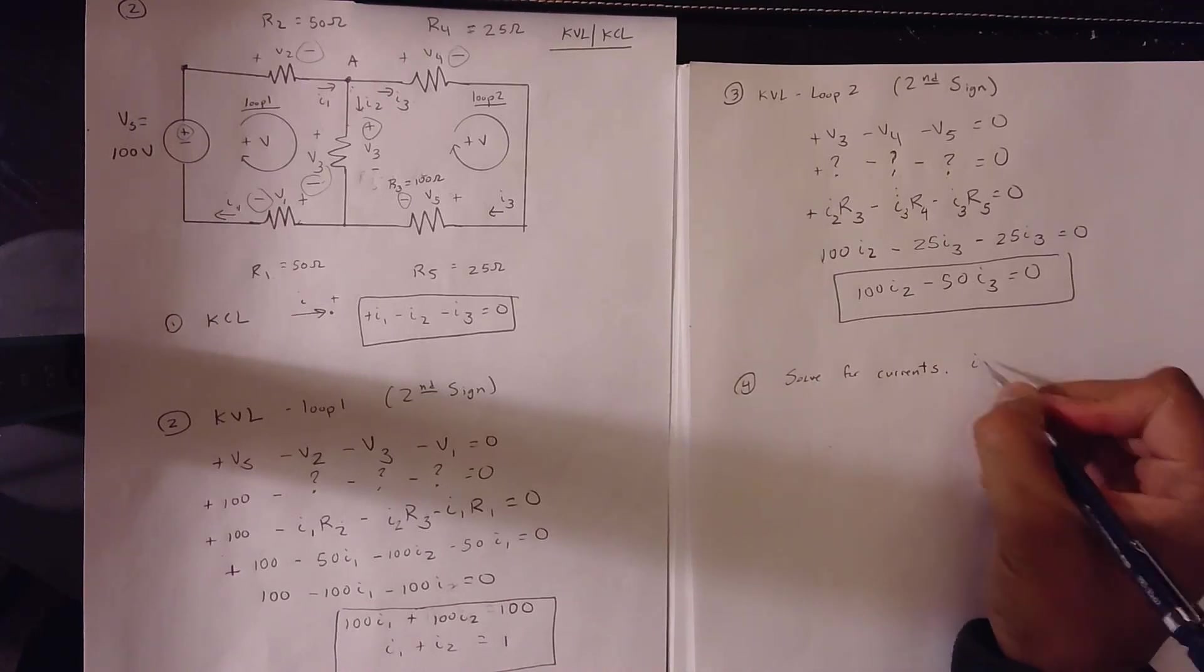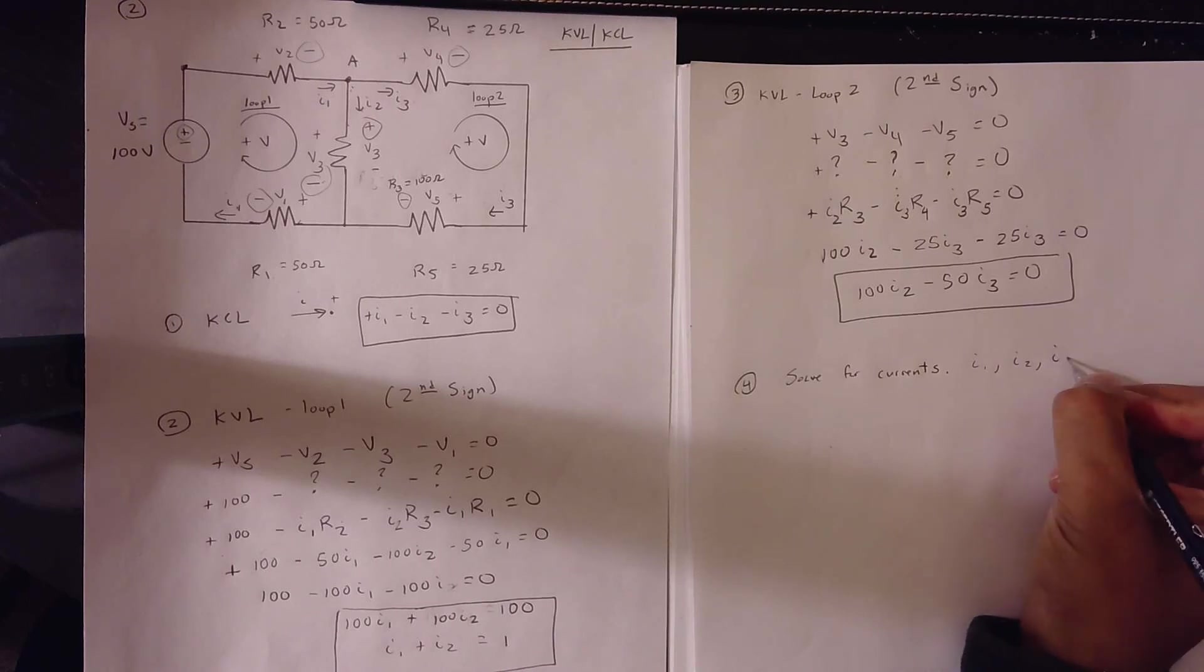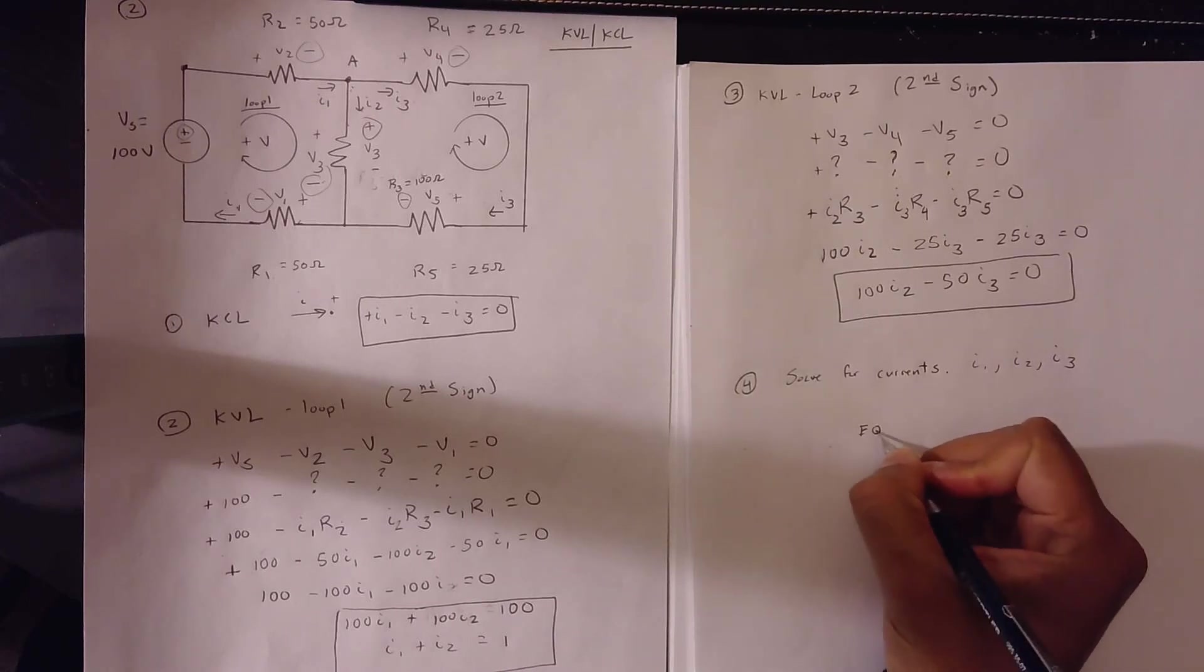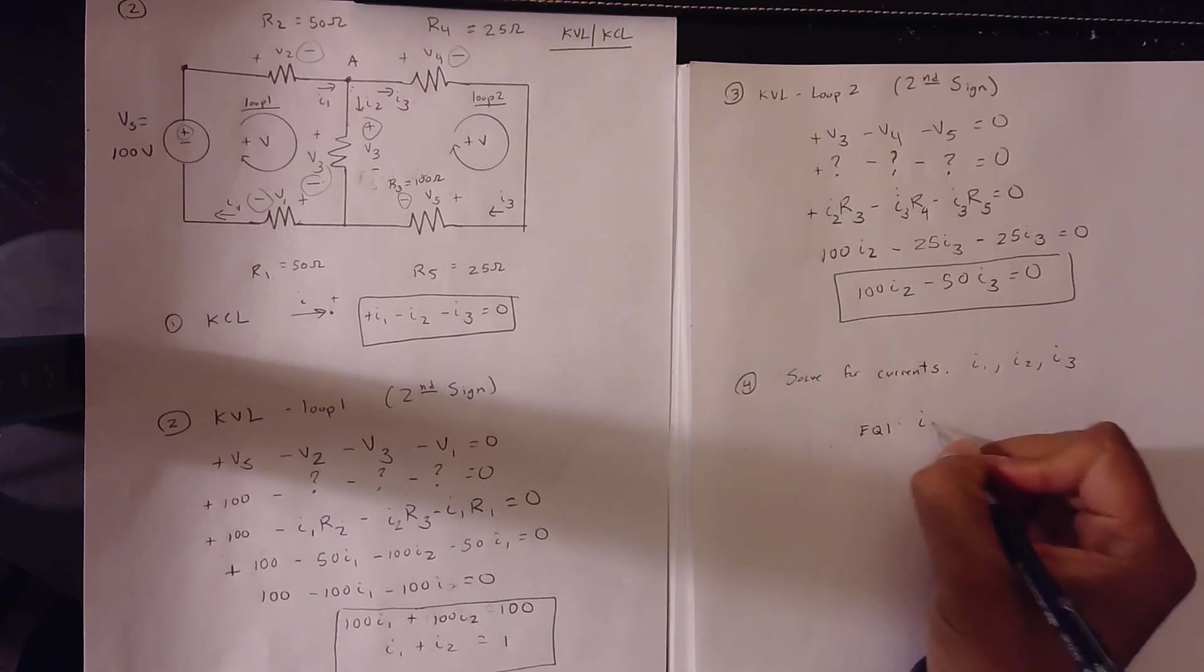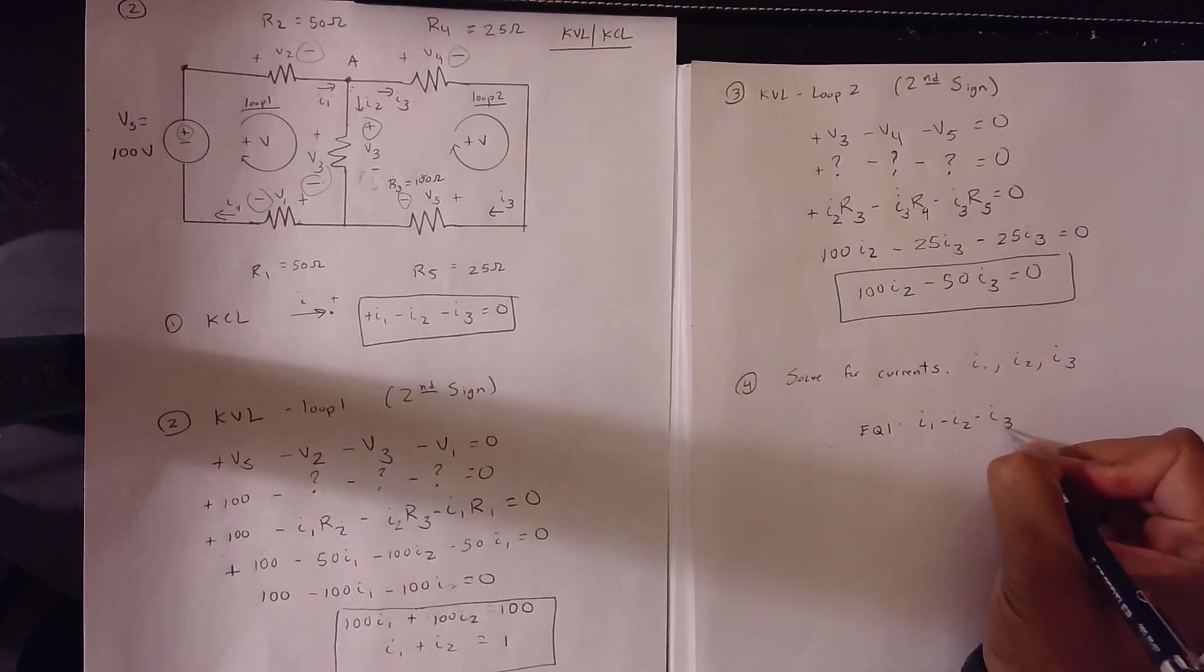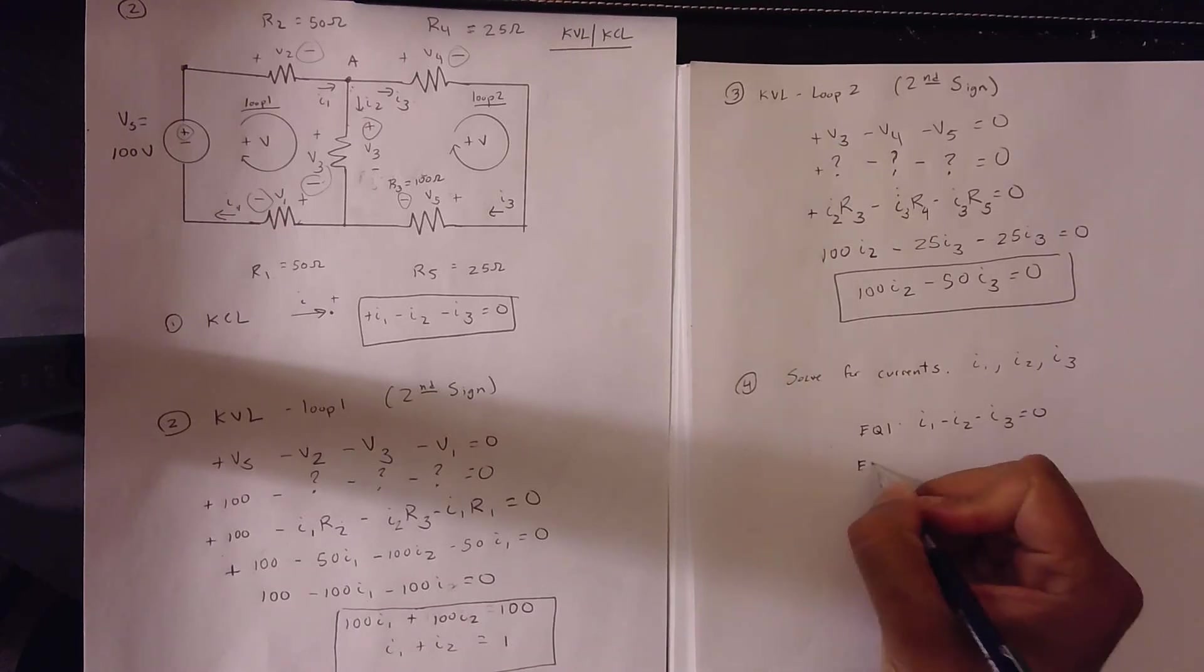So, when you solve for currents, I1, I2, I3. You set it up where equation 1 is I1 minus I2 minus I3 is equal to 0.